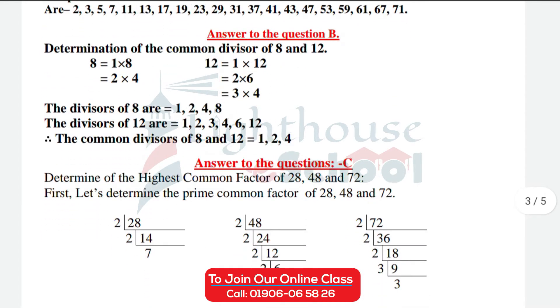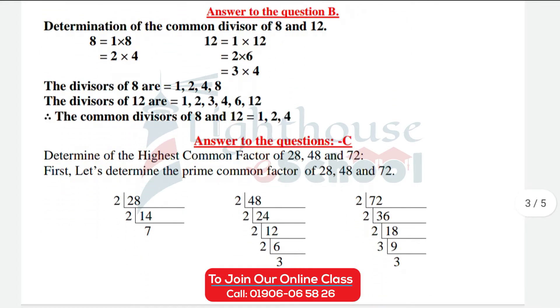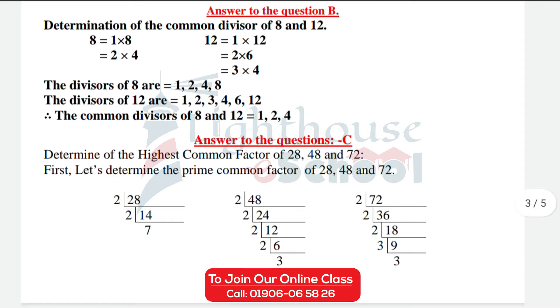According to question number B: determination of the common divisors of 8 and 12. 8 equals 1 × 8 and 2 × 4. 12 equals 1 × 12, 2 × 6, and 3 × 4.